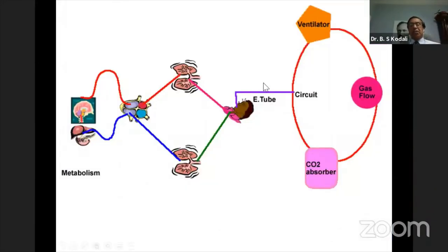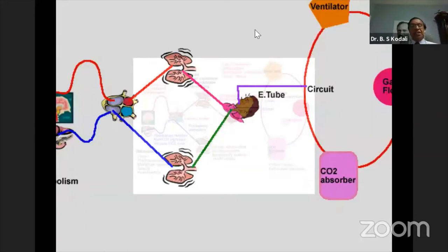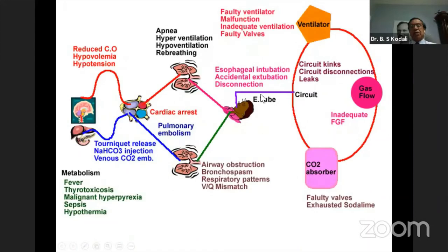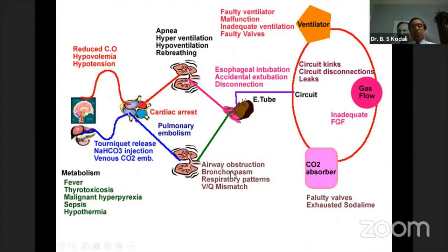Since CO2 is monitored between the anesthesia circuit and the patient circuit, changes in the patient are reflected in the CO2. It can detect esophageal intubation, accidental extubation, disconnection, apnea, hyperventilation, rebreathing, reduced cardiac output, hypovolemia, hypotension, changes in CO2 production (such as tourniquet release or sodium bicarbonate administration), pulmonary embolism, cardiac arrest, airway obstruction, bronchospasm, respiratory pattern changes, VQ mismatch, and ventilator circuit kinking or malfunction. Since capnography is an indirect monitor, you must look at the CO2 waveform and assess what is happening around it.